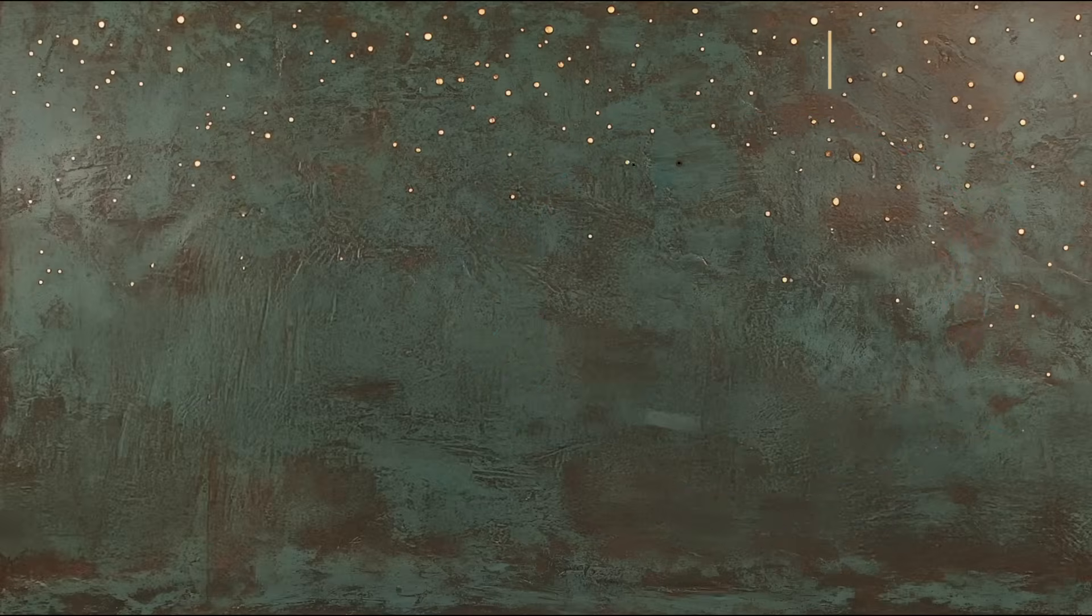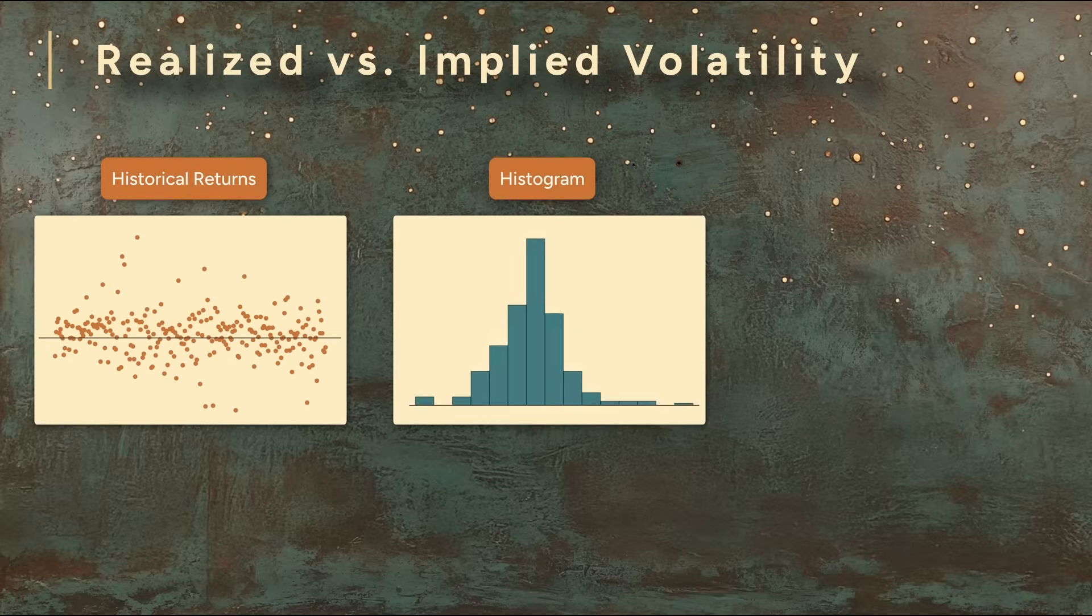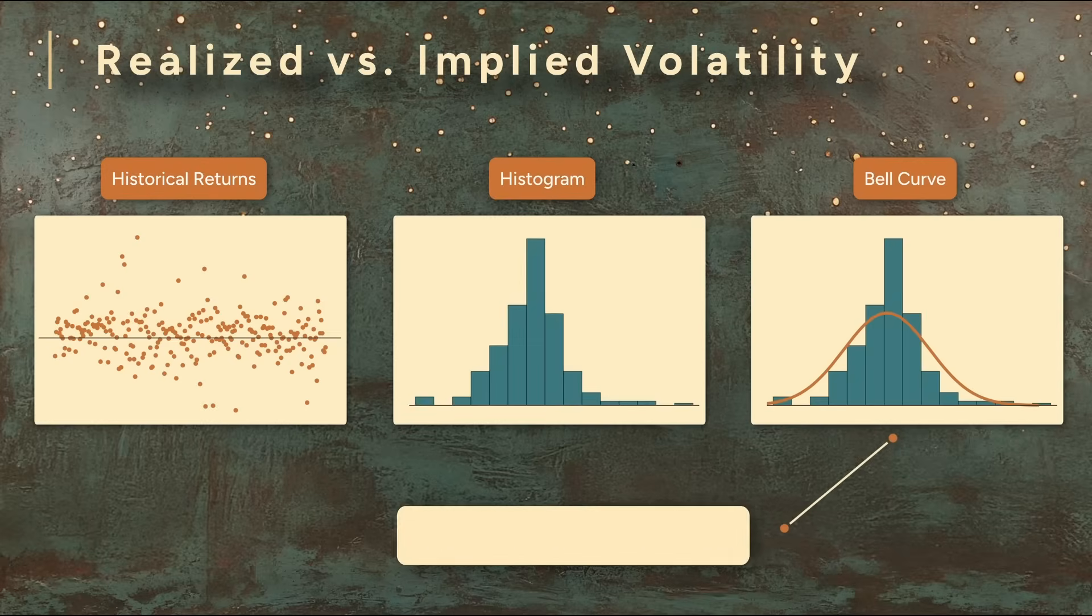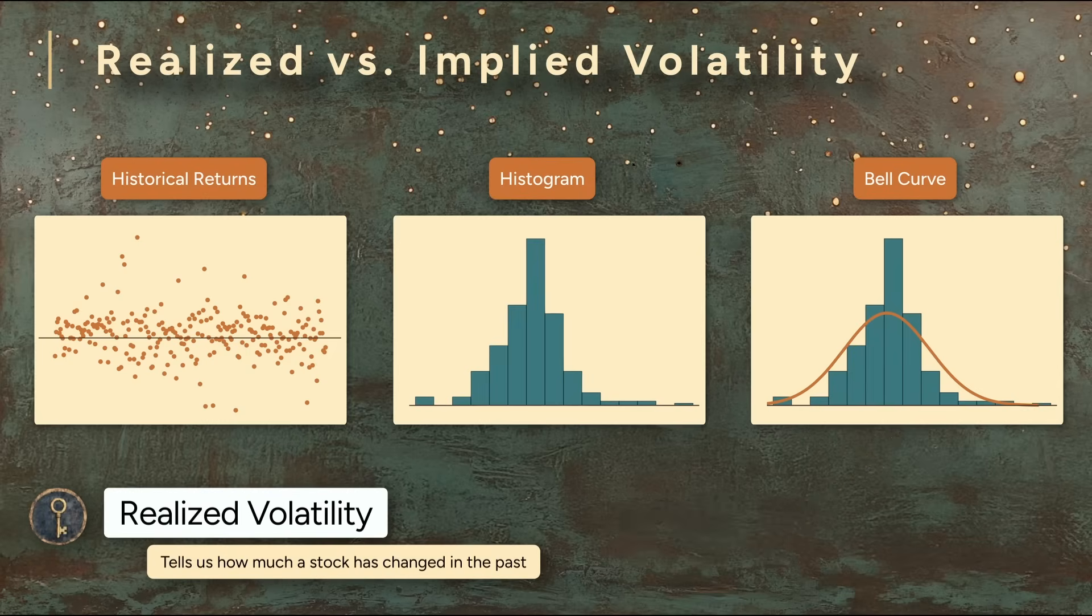We can look at a stock's historical returns, put them in a histogram, and see that familiar bell curve. From that curve, we can calculate the standard deviation, and that gives us a single number for realized volatility. That tells us how much the stock has bounced around in the past.